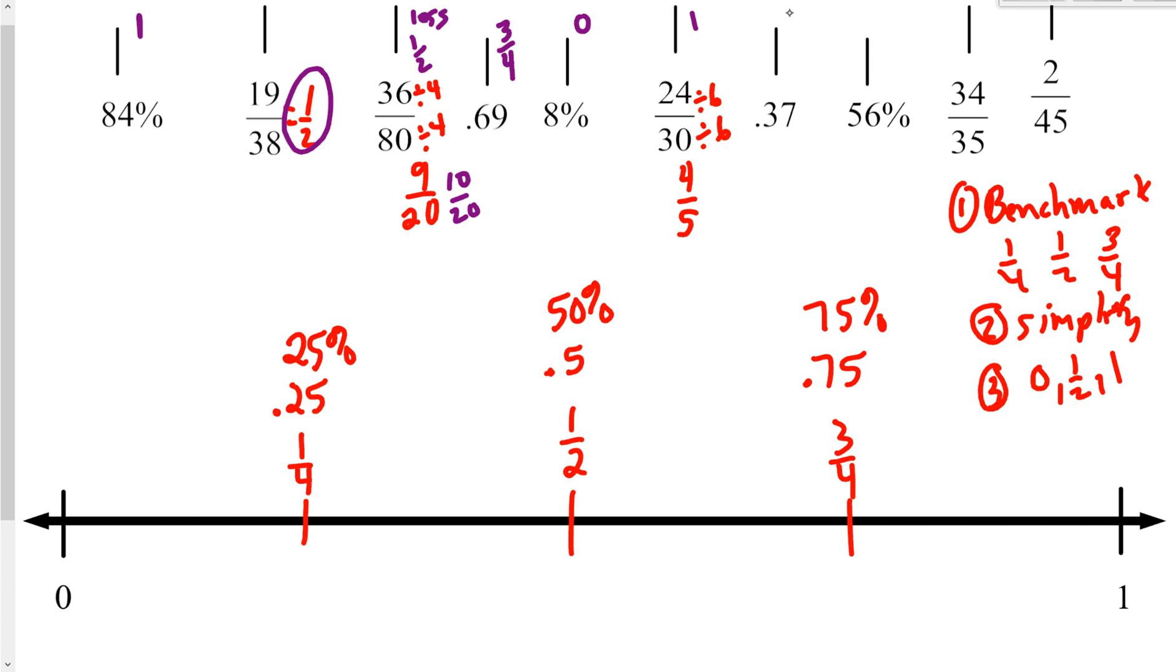37 hundredths, that's between one-fourth and one-half. 56% is about one-half, a little bit bigger. 34/35, very close to one whole, and then 2/45, down near zero.